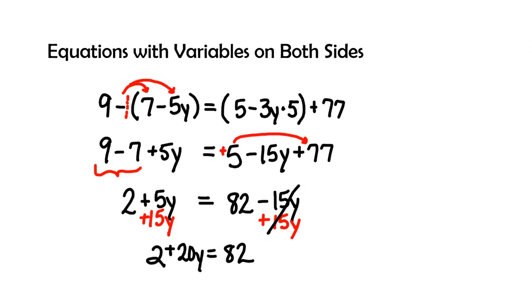So now I'm going to subtract 2 on both sides or add a negative 2 on both sides, which then this cancels out or gives me 0. And I'm going to write my next step right over in this direction, that I will have 20y is equal to 80, because 82 minus 2 is 80. Now, seeing my coefficient, I'm going to divide by the coefficient of 20 on both sides.